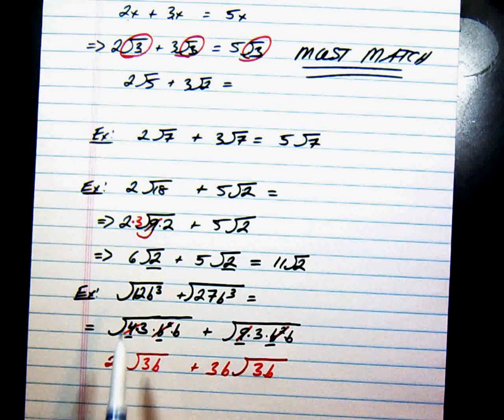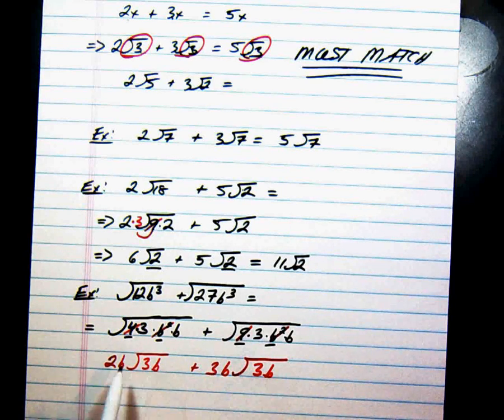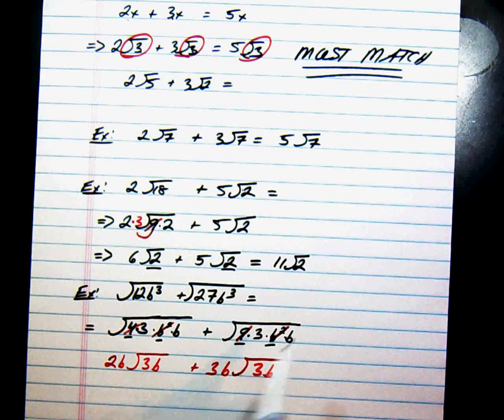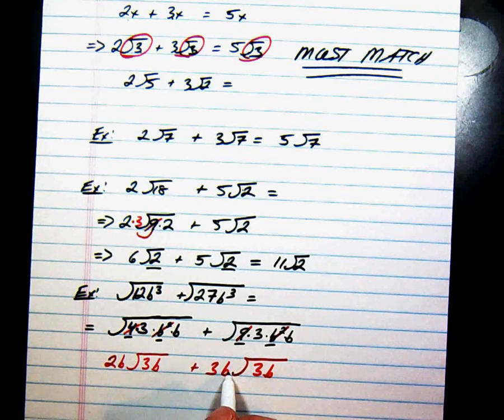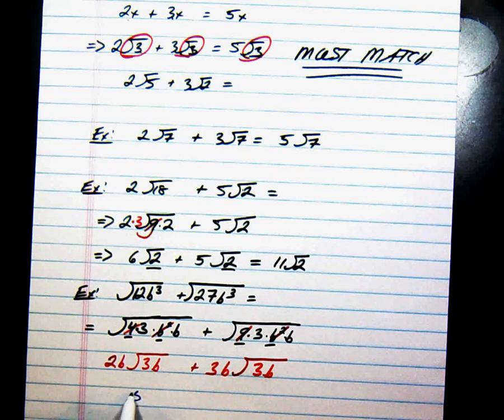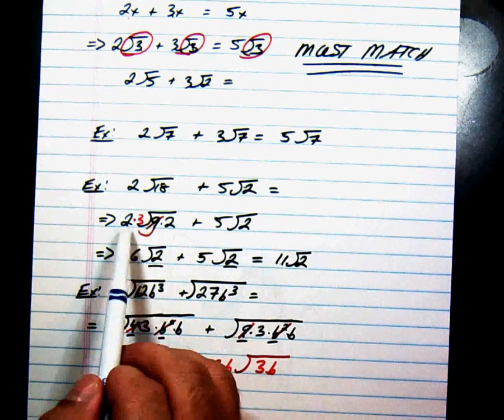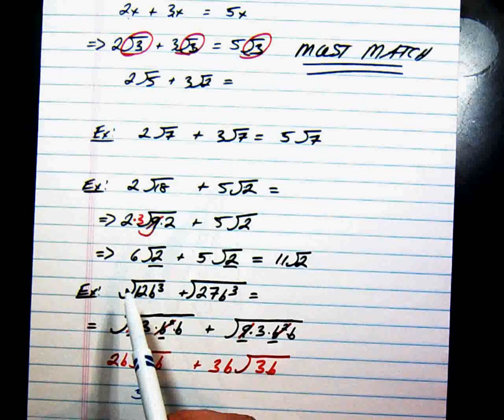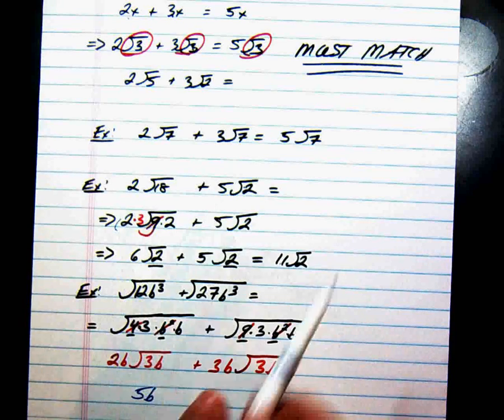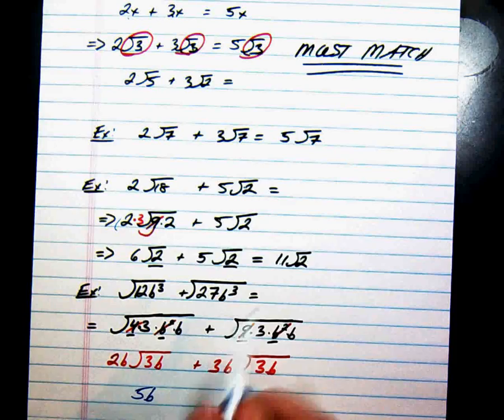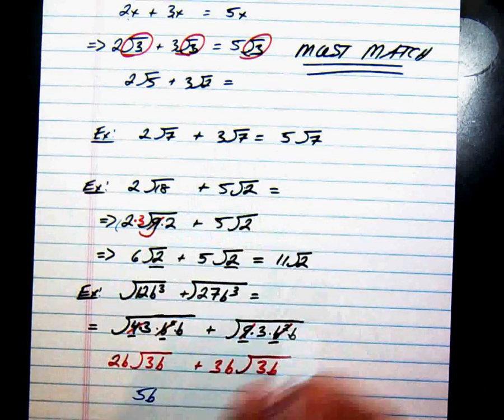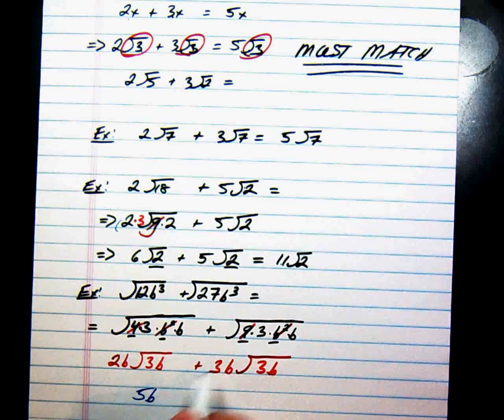Now notice, the radicals are the same, so the same rules apply. 2b and 3b is 5b. You add the outsides. Just like we did here. 6 and 5 gave us 11. 2 and 3 gave us 5. We can do the same thing here. 2b plus 3b is 5b. And then underneath the radical is 3b.